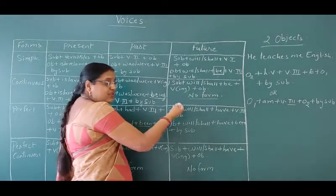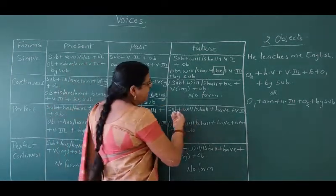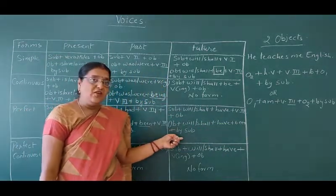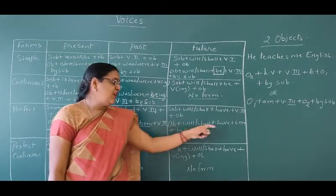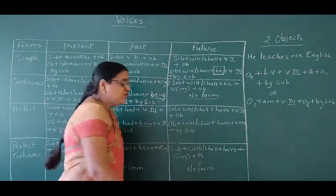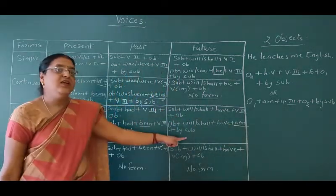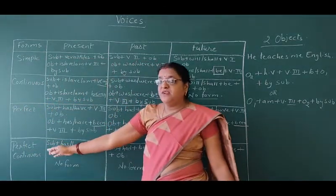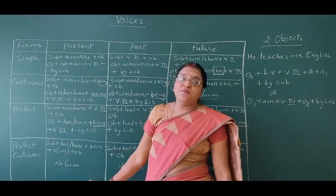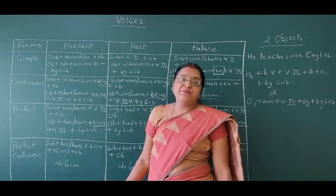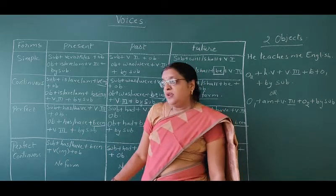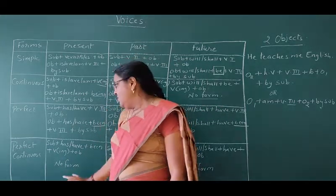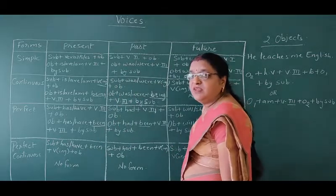In the future perfect tense in active voice: subject plus 'will' or 'shall' plus 'have' plus the third form of the verb plus object. In passive voice: object plus 'will' or 'shall' plus 'have' plus 'been' plus the third form of the verb plus 'by' the subject. Finally, in the perfect continuous form, no passive voice can be made — remember this. We are not studying the perfect continuous passive.